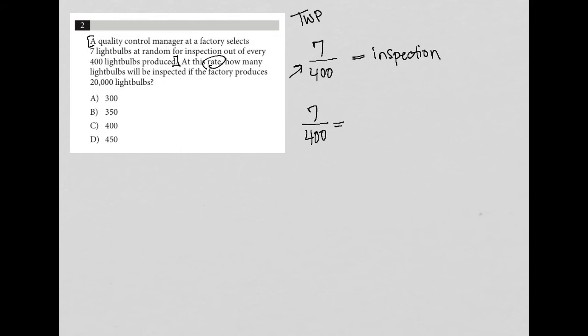And again, I want to set it up in the same way that I have the information set up. And that is number of light bulbs selected on top, in this case being X, because we don't know how many will be used or selected, out of the total number of light bulbs on bottom, which in this case the question tells us is 20,000.